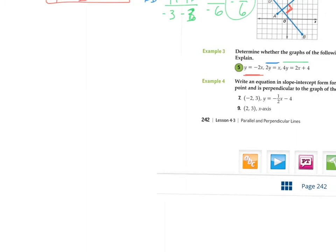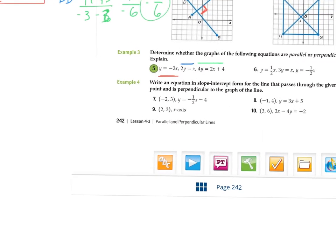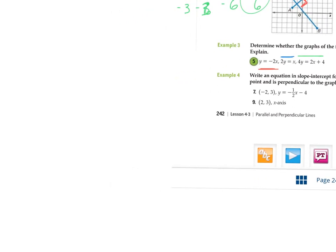And remember, what are we trying to do? It just says determine whether the graphs are parallel or perpendicular. So let's look at their three slopes. So I'll look at the red one that I did here first. So this is y equals negative two x. So this just has a slope of negative two.